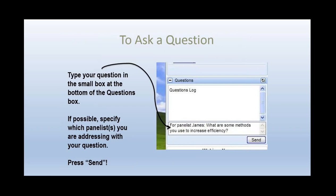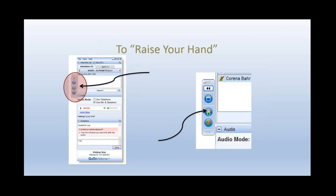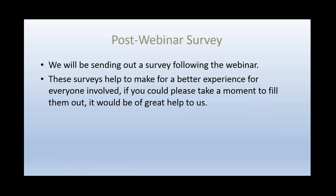We have two ways that you'll be able to interact with us today. You can either type your question into the control panel or you can raise your hand — that button is on the left side of your control panel. If you raise your hand, we will unmute you and you'll be able to speak to us. Typing the question in or raising your hand both work fine and we encourage you to ask questions throughout the session. We also have a post-webinar survey that will pop up after you exit and we'll email you a copy as well. Please fill it out — it helps with continuous improvement.